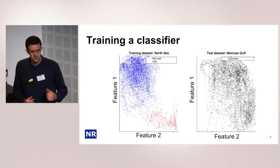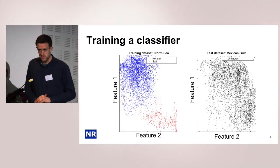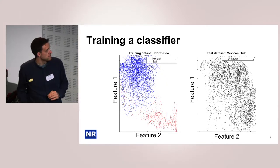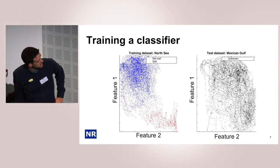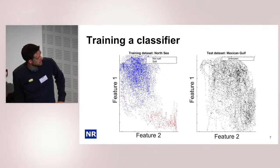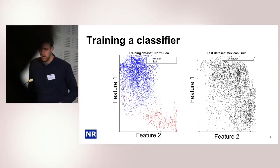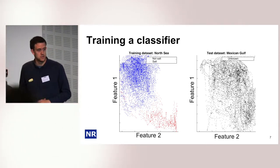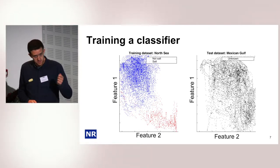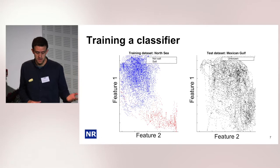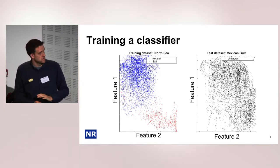During my PhD, I worked a lot on salt bodies. The traditional way is that you have a salt body located below a strong reflection, and typically you want to make a 3D model of the salt, so you have to interpret the salt in many slices. Instead of doing that manually, you could use machine learning to automate it.